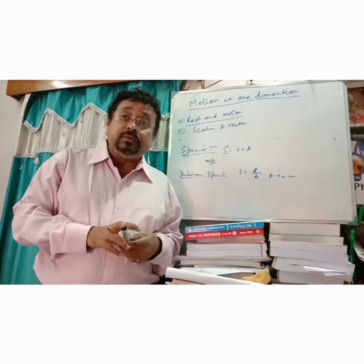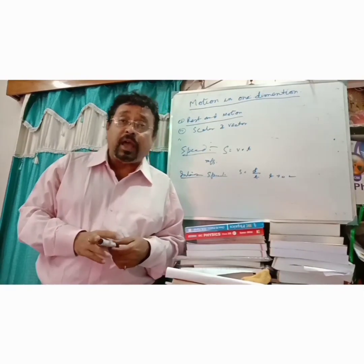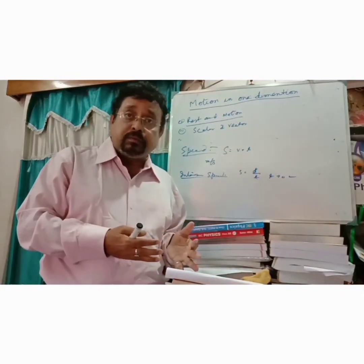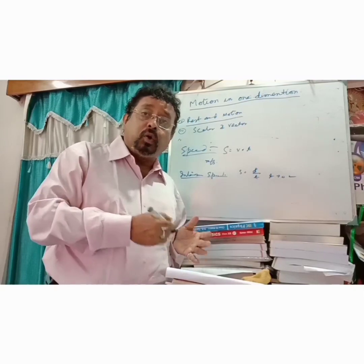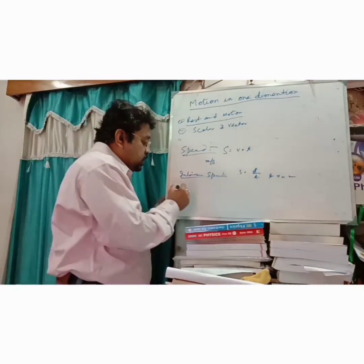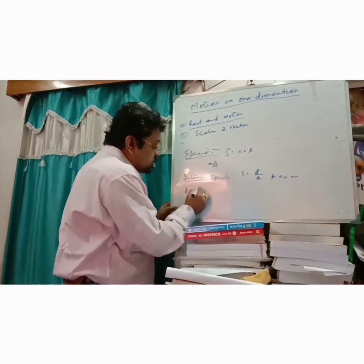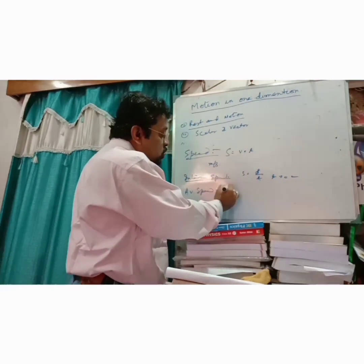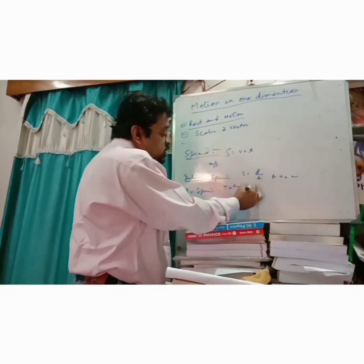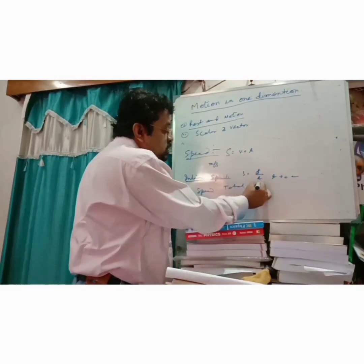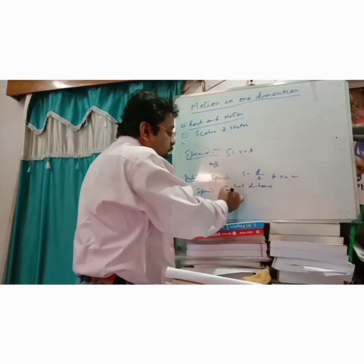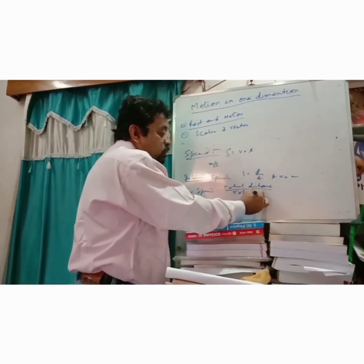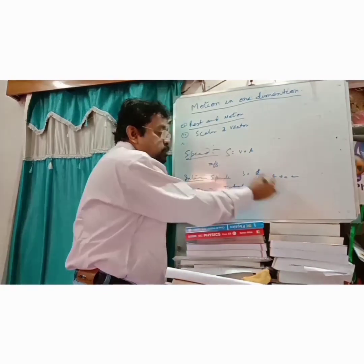Average speed is the total distance covered divided by the total time taken.